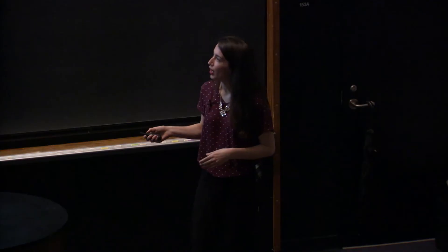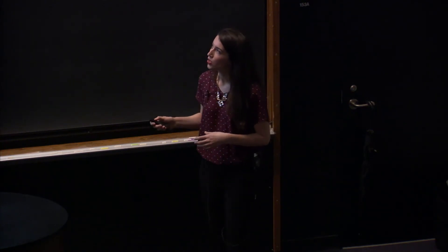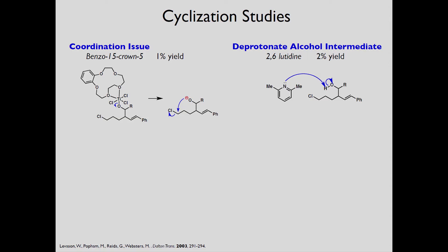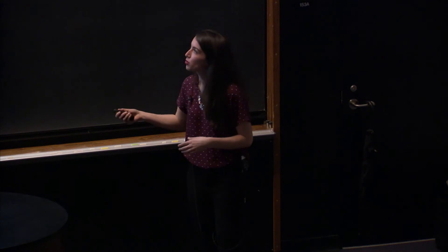We decided to test a variety of additives to see which of these hypotheses was correct. We started off with a crown ether benzo 15 crown 5 which has been known to coordinate to titanium. So here you can see that the crown ether is coordinated to the titanium in the Lewis acid and we believed that by coordinating it here we would weaken this titanium oxygen bond and then we would allow for cyclization to occur. Unfortunately this was not correct, we only got 1% yield of the desired product so we moved on to the deprotonation theory.